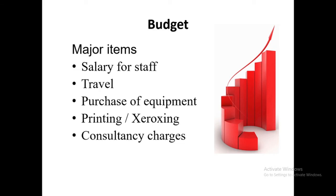Budget: in a proposal for a commercial base, you have to give all budget details. Even in a synopsis written for academic purposes, you should provide a budget. Major budget items include: salary for staff, traveling (international or domestic), purchase of equipment, printing, photocopying, and other miscellaneous charges.